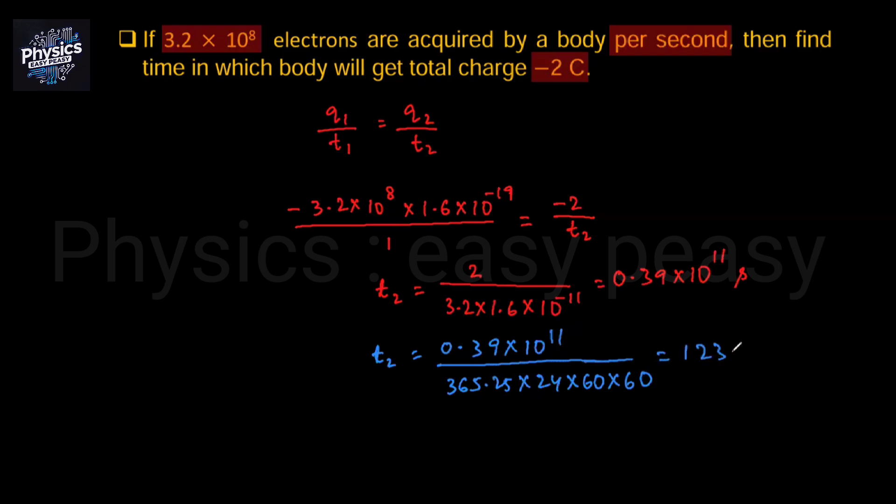This equals 1,235.8 years, meaning the total minus 2 coulomb amount of charge will develop if 3.2×10^8 electrons per second are acquired.